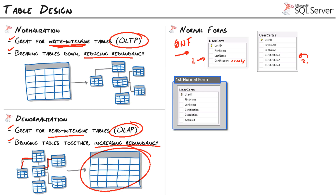The second example is a repeating group of fields where for every certification we have another column. To get to first normal form we need to follow three rules. First, each column must contain atomic values — none of the comma-separated business with certifications. Second, column names must be unique — none of having multiple certification columns, which is bad design anyway because if somebody has one cert there's wasted space and if they have ten we'd need to redesign. The third rule is that every table must have a primary key.